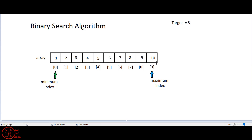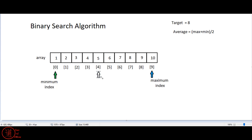That means it's not on the edges, so if it's in the list it must be somewhere in the middle of the search area. What we do next is look in the center of the list to split it in half. We find the middle element by finding the average: average = (max + min) / 2. With max = 9 and min = 0, that's 9 / 2 = 4.5, which as an integer becomes 4. So array[4] = 5, which is not our target.